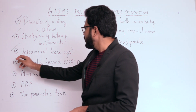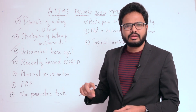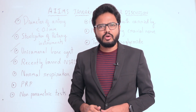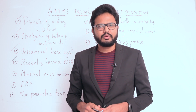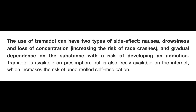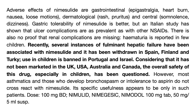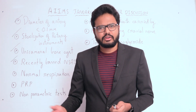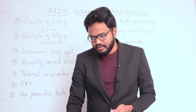Tramadol is banned, especially in sporting events, because of its addiction potential and adverse effects. Tramadol is an opioid. The NSAID which is banned is nimesulide — there are many adverse effects associated with nimesulide, including fulminant liver failure or hepatic failure. As a consequence, it has been withdrawn in several countries.